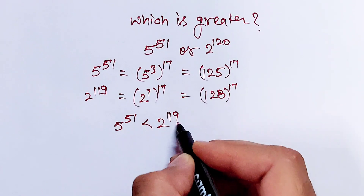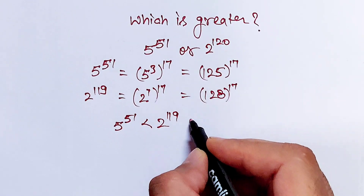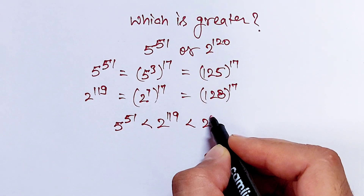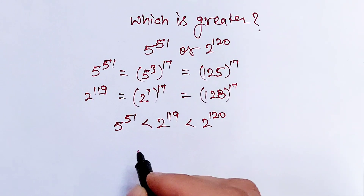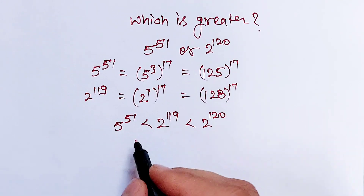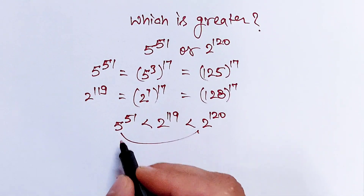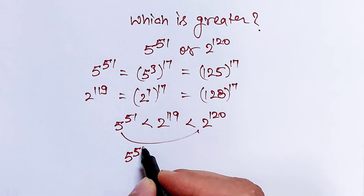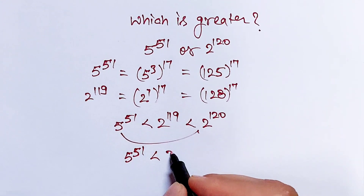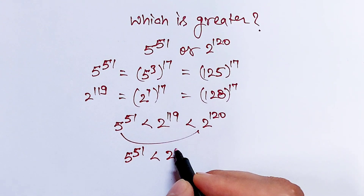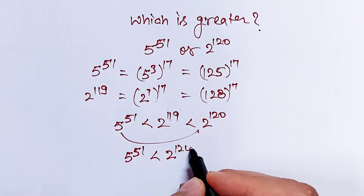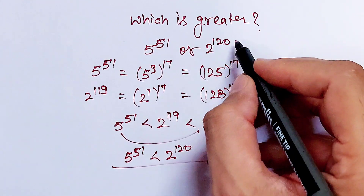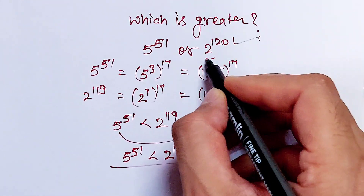2 power 119 is further smaller than 2 power 120. So the final answer is: 5 power 51 is smaller, and 2 power 120 is greater.